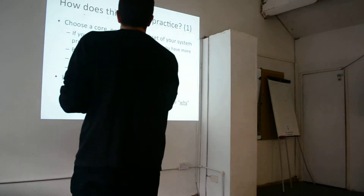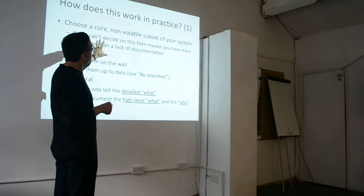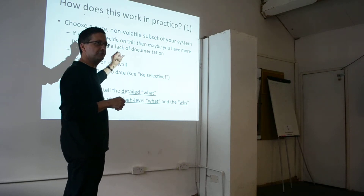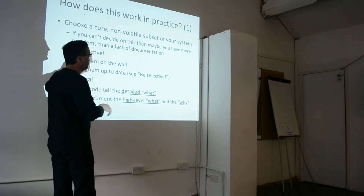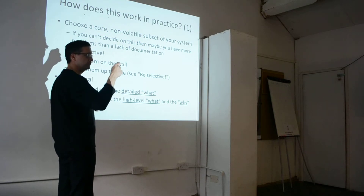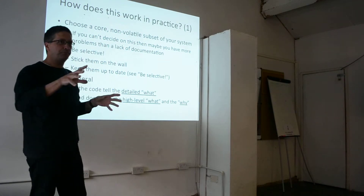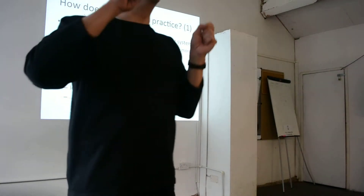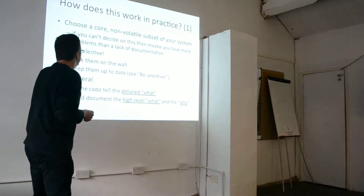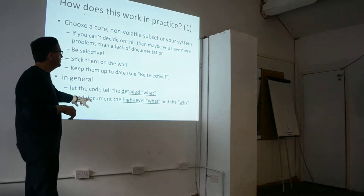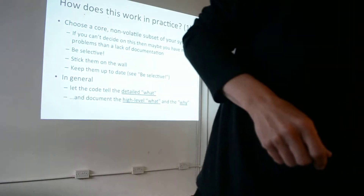How does this work in practice? Choose a core, non-volatile subset of your system. If you can't decide on that, you may have bigger problems than lack of documentation. Be selective about what you're going to document. Stick the pictures on the wall around you so you notice when they go out of date, and keep them up to date. The main problem is people don't want to do documentation because they choose to do too much of it. In general, let the code tell the detailed 'what'; documentation should cover the high-level 'what' and the 'why' — why does the system work this way?